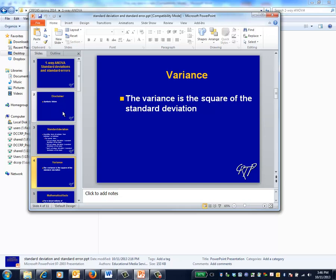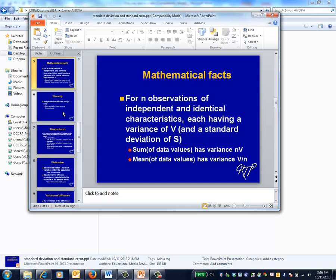One other reminder: the standard deviation is the square root of the variance and the variance is the square root of the standard deviation. Thus these quantities are essentially interchangeable. Some useful mathematical facts: First, the sum of n independent, identically distributed observations has a variance of n times v, where v is the variance of any of the individual observations.